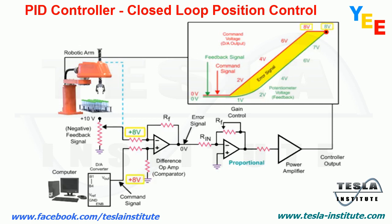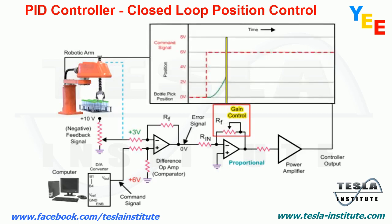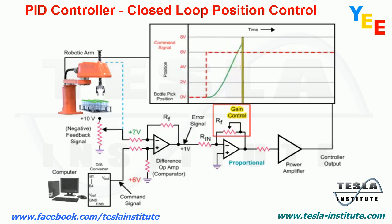To increase the response time of the robotic arm to the command signal, the gain of the proportional amplifier can be increased. However, increasing the gain of the op-amp has a disadvantage where the robotic arm overshoots the targeted position.